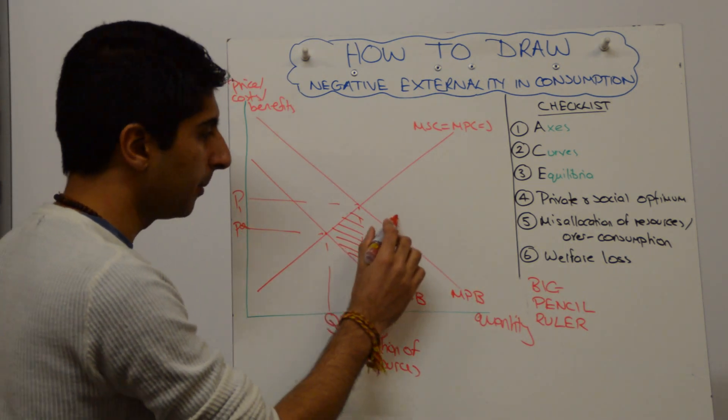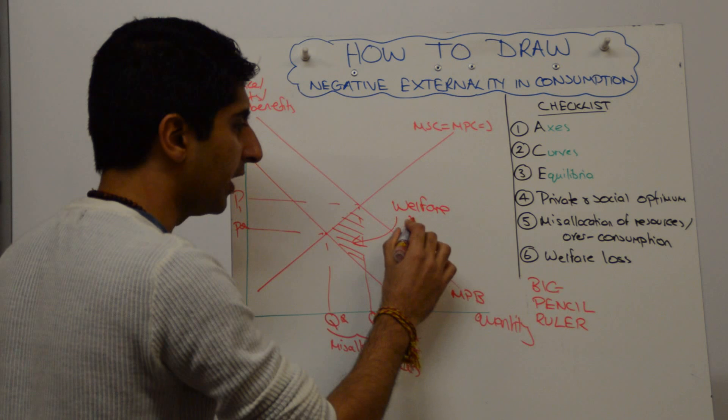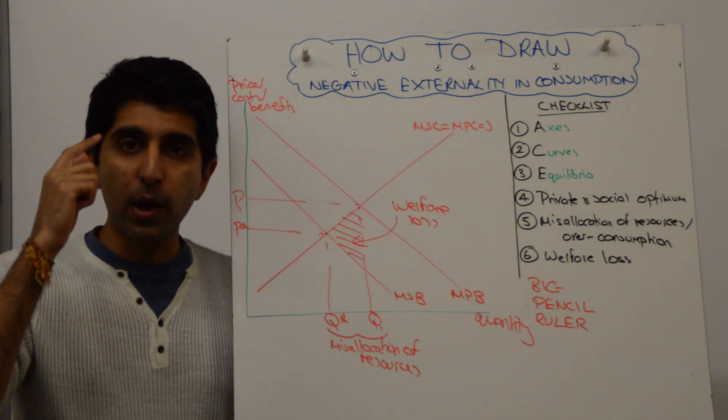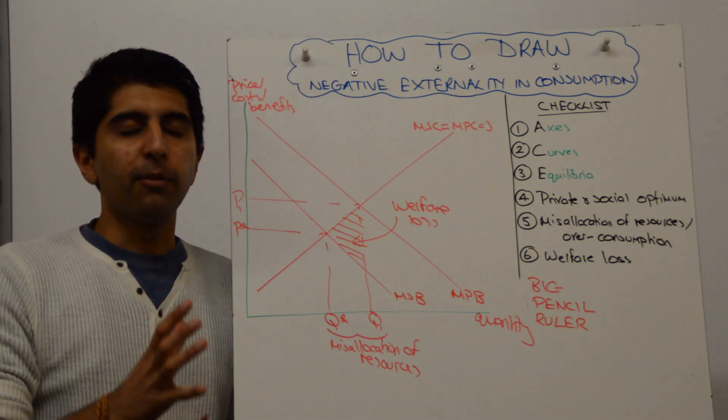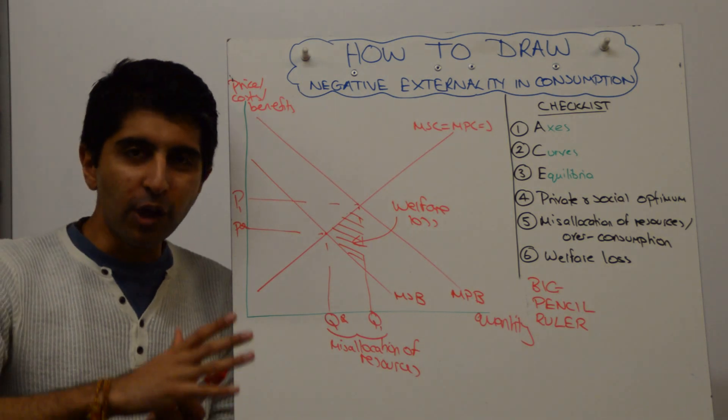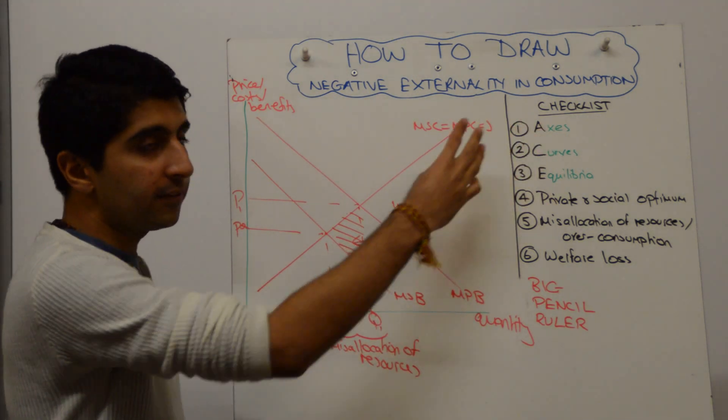Pointing to the social optimum. Label that. Make it clear to the examiner again. You know what you're shading in and what it represents. That's the welfare loss. Remember, my technique, you have a mental checklist to then go through. In your head, you think, right, before I start drawing, what am I trying to show here? You know what you're trying to show, and you know as well, as an economist, good habits you must do. Three good habits are there.